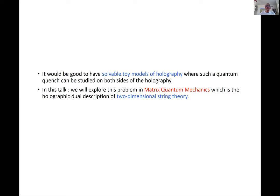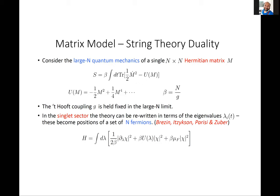It would be good to have solvable toy models of holography where quantum quench can be studied on both sides. In this talk we explore this in matrix quantum mechanics — the holographic dual of two-dimensional string theory. I'll give a lightning review of the matrix model / string theory duality. One starts with a large N×N Hermitian matrix, a single matrix that is a function of time. The action is invariant under U(N) symmetry and has a 't Hooft coupling g, held fixed in the large N limit, with a potential containing quadratic, quartic, and higher terms.